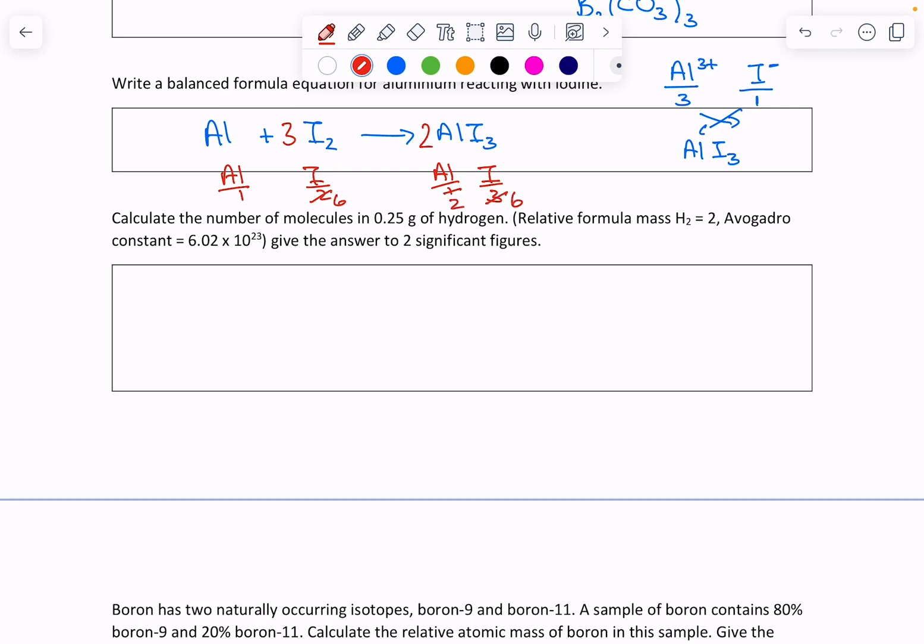And a 2 in front of the aluminium iodide, that also gets me 6. I've now got two aluminium iodides, so if I put a 2 there, then I've got a balanced equation for that reaction.